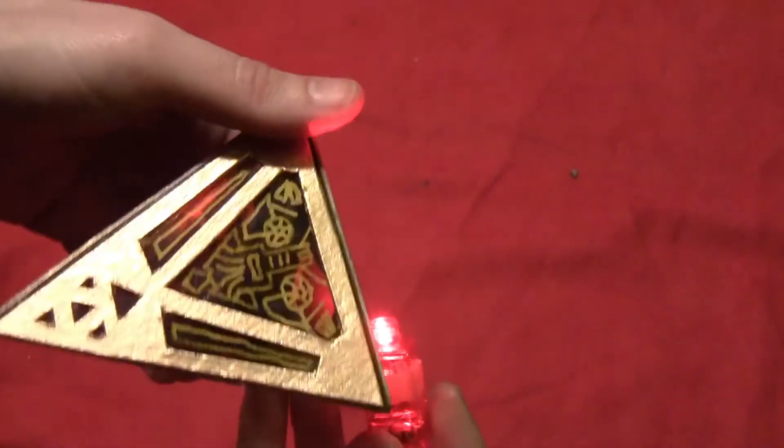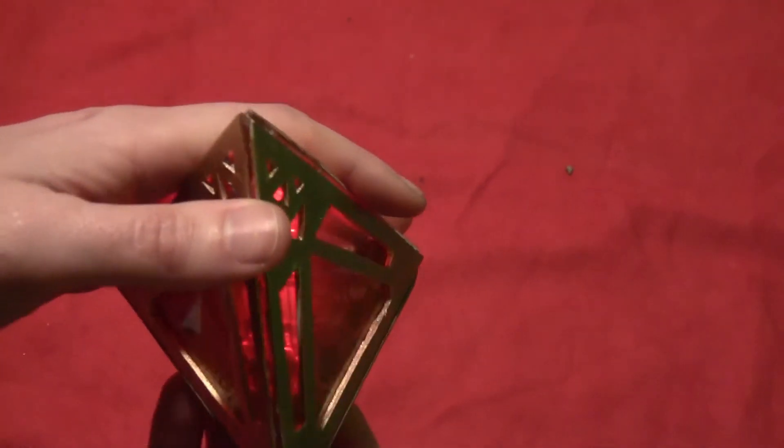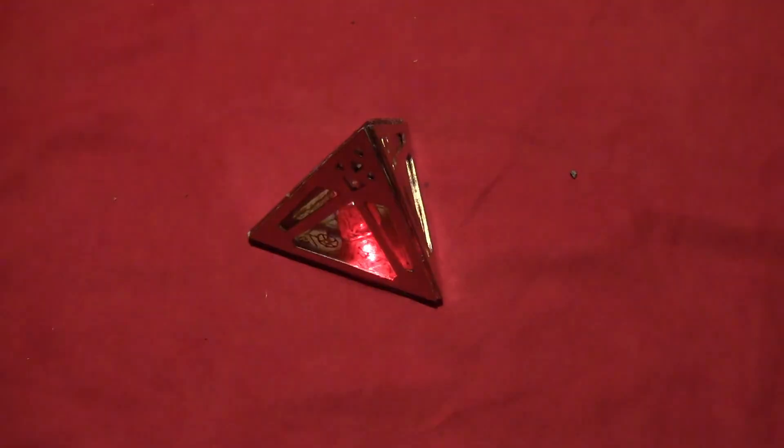Then you can just take a red finger light, stick that in the hole, and put the magnet on the bottom. That'll hold the light in place and then your holocron will glow.